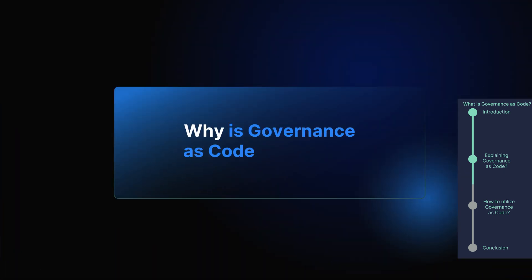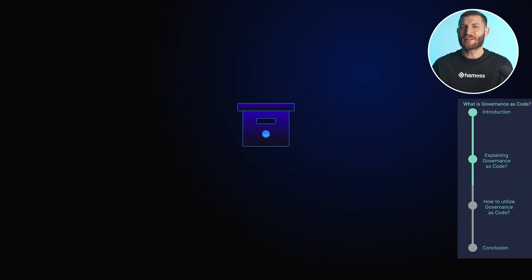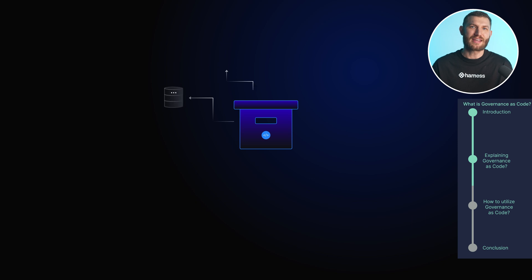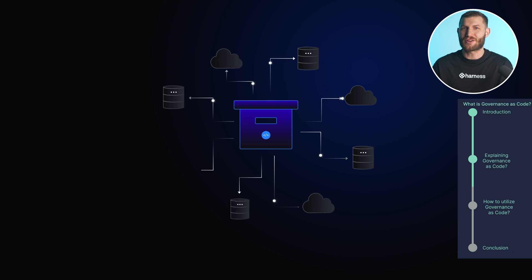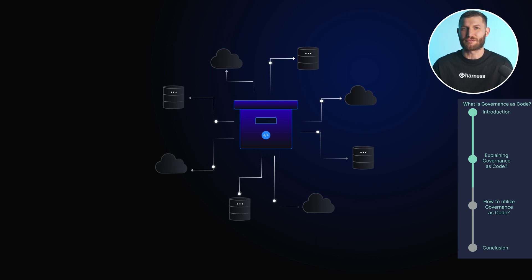Why is governance as code important? First, consistency and standardization. With governance as code, you can ensure that the same rules and policies are applied across your entire infrastructure. This reduces the chance of errors or gaps in compliance, as everything is enforced automatically.